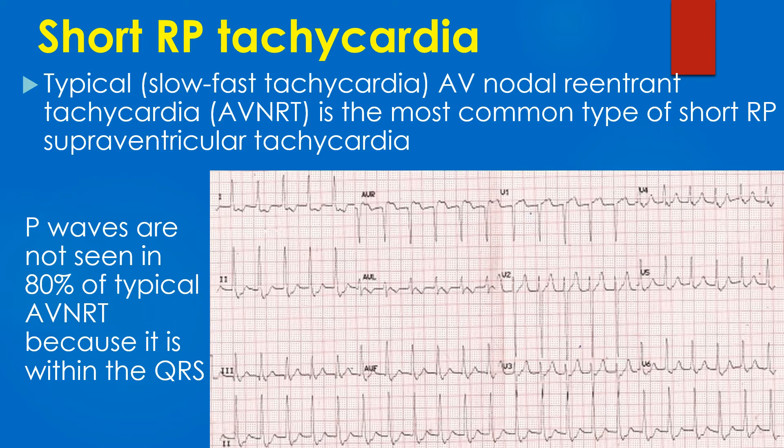Typical slow-fast AV nodal reentrant tachycardia (AVNRT) is the most common type of short RP supraventricular tachycardia. It is called slow-fast tachycardia in which the impulse travels downwards through the slow pathway and back through the fast pathway. P waves are not seen in 80% of typical AVNRT because it is within the QRS; in 20% it is visible just after the QRS.